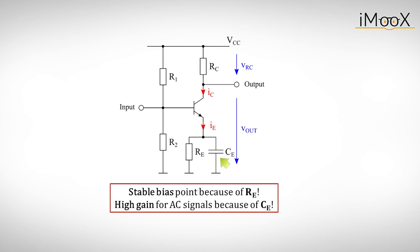Now, on the one hand, the emitter resistor allows a stable bias point, which will adapt to changes in temperature. The capacitor, on the other hand, allows a low emitter impedance and therefore a high gain for AC signals.